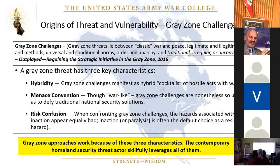Risk confusion is the idea that when confronting a gray zone challenge, the hazards associated with action and the hazards associated with inaction appear to be equally bad and unpalatable. Inaction or paralysis is often the default choice among senior decision makers because inaction—though having adverse downstream effects—is deferred hazard. It's because of these three characteristics that a gray zone approach works, and the contemporary Homeland Security threat actor is skillfully leveraging all of them to get at decisive effects against the United States.